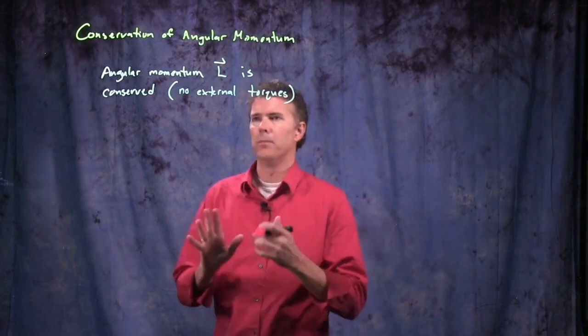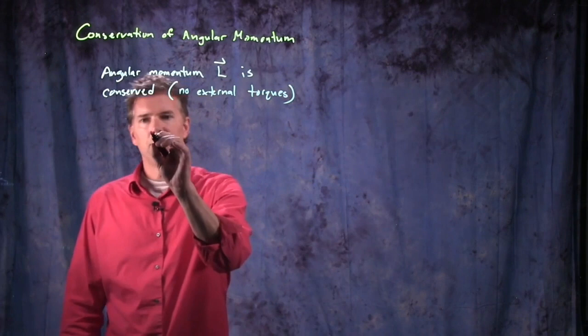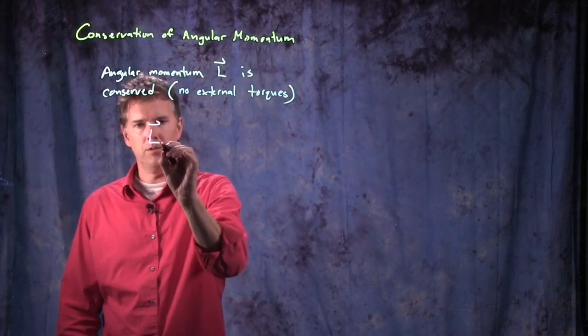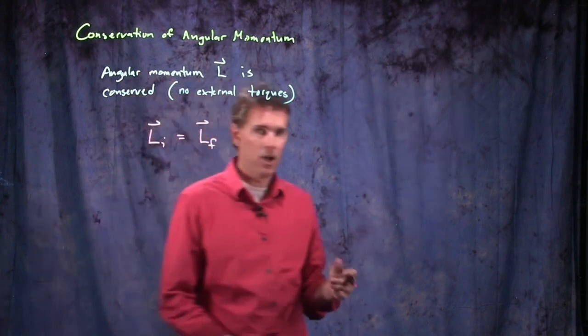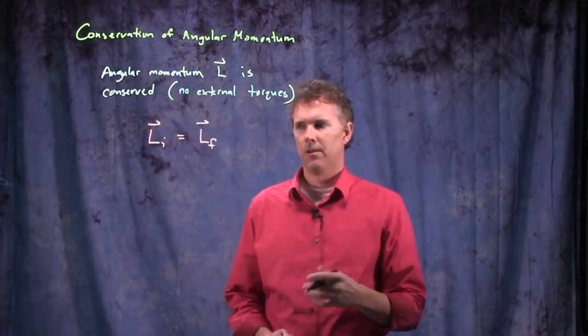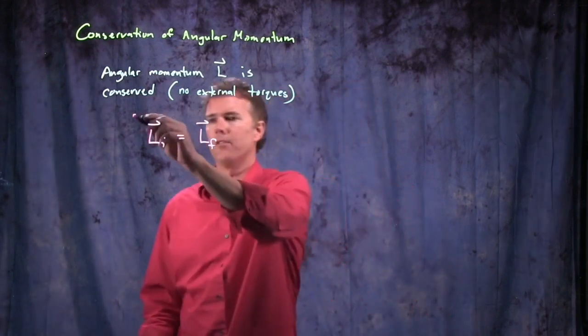Alright, so what do we mean by this? What we mean is the following: L, which is a vector of course, initial has to equal L final. This is the idea of conservation of momentum.